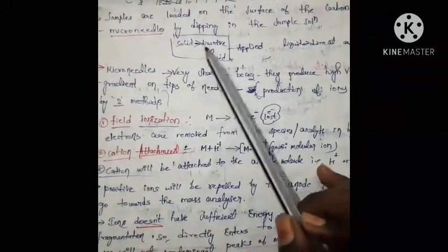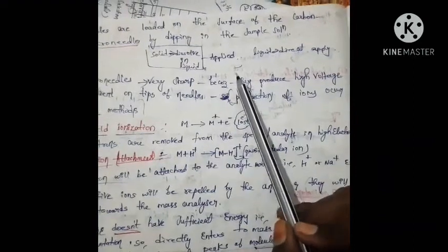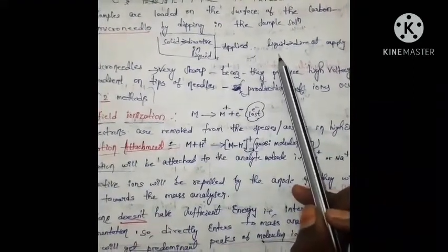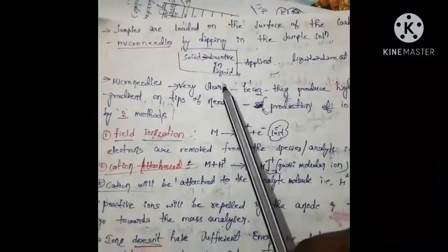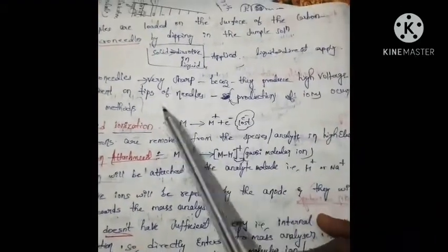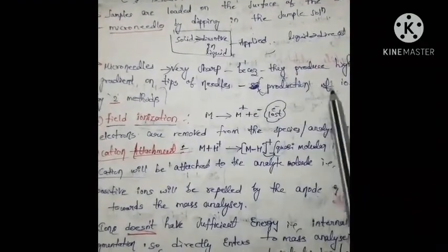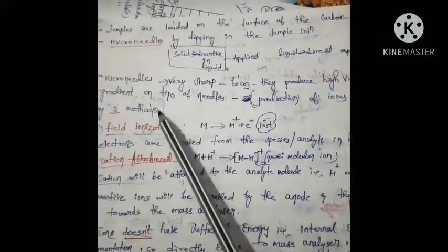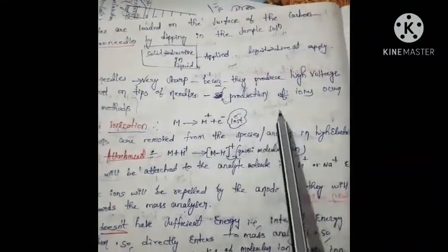If the sample is solid, it must be dissolved in a liquid first and then applied. If it is liquid, it can be directly applied. The micro needles are very sharp because they produce a very high voltage gradient on the tips of the needles.